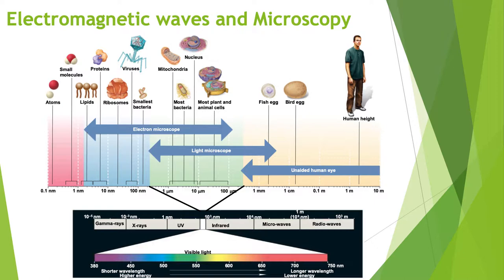Microscopes work mostly on principles of physics. It basically has to do with the light spectrum. Humans see what we call the visible light spectrum: the shortest wavelength we see is around deep violet at approximately 380 nanometers, and we can see up through reds, which have a longer wavelength of about 750 nanometers. When talking about wavelengths of light, a short wavelength has a lot of energy, and a longer wavelength has lower energy.